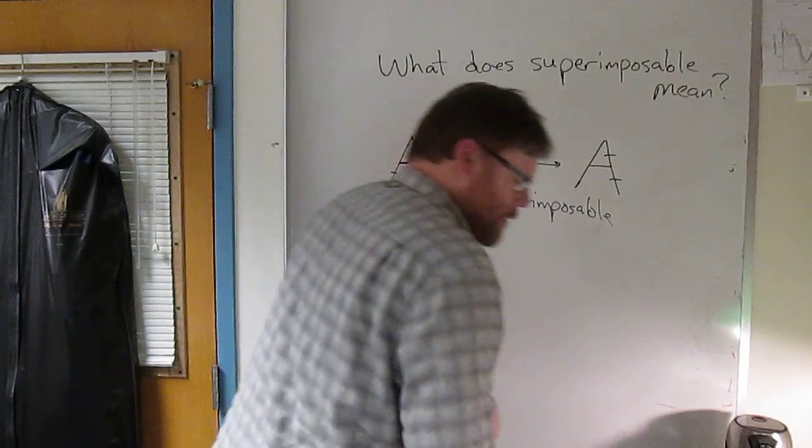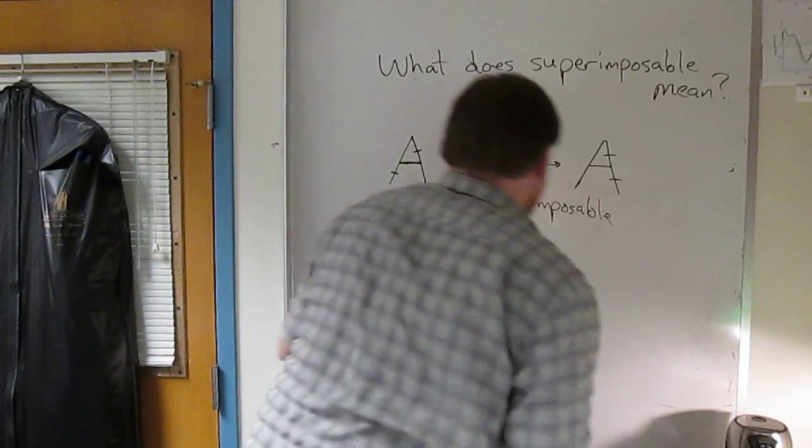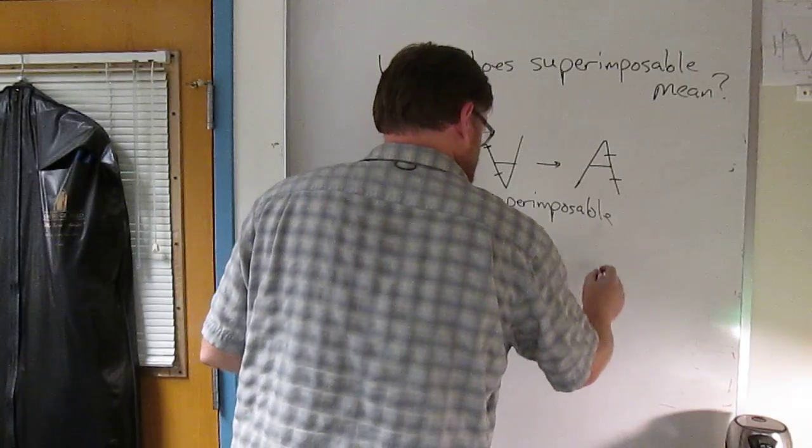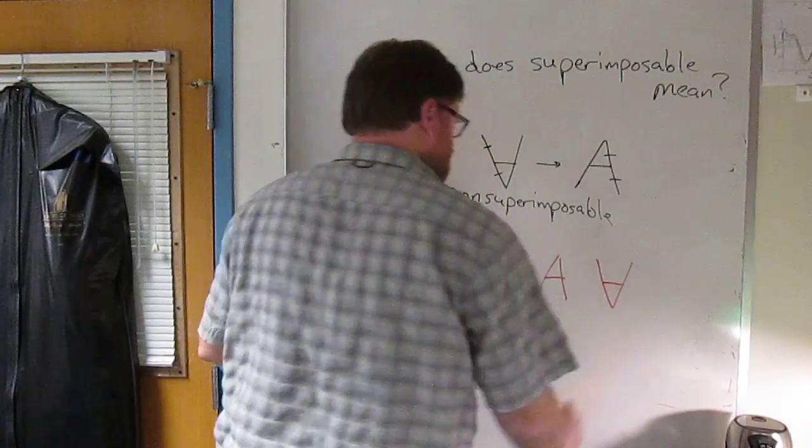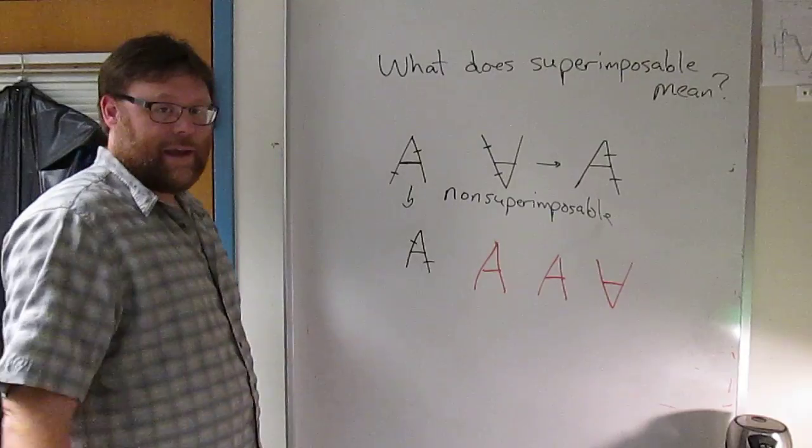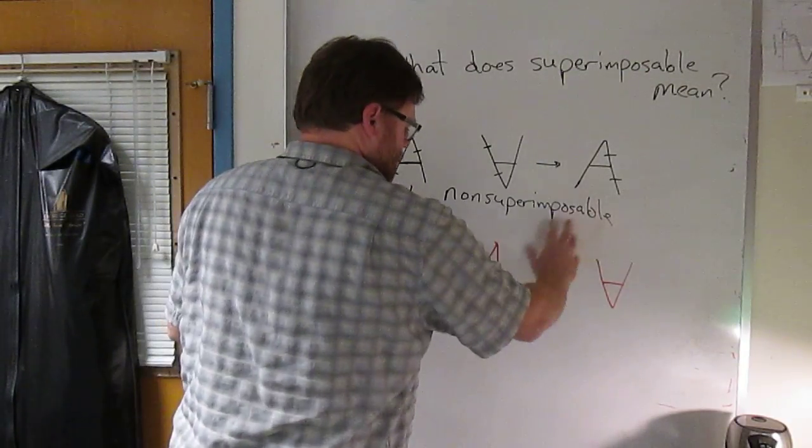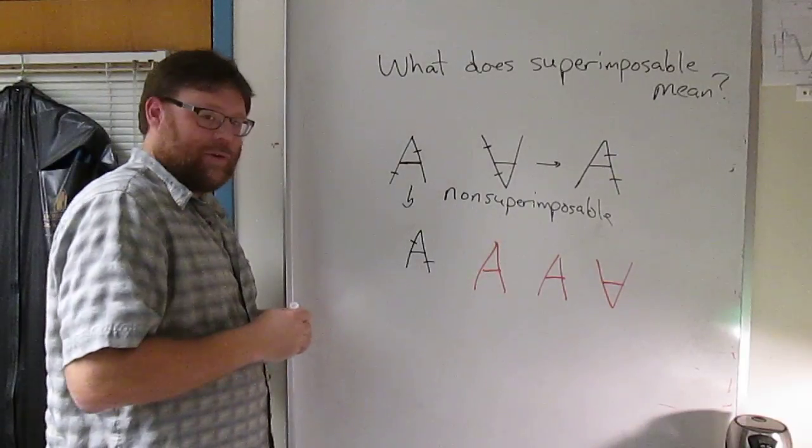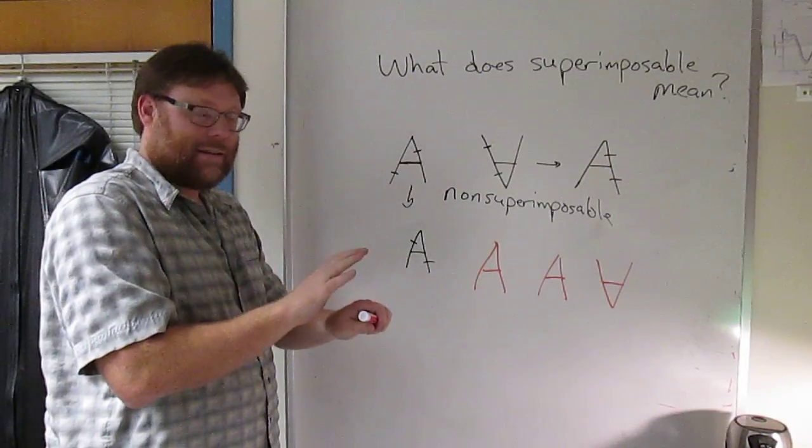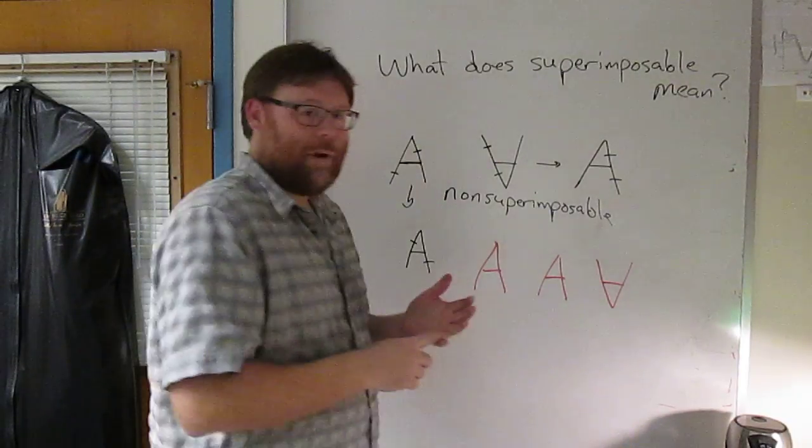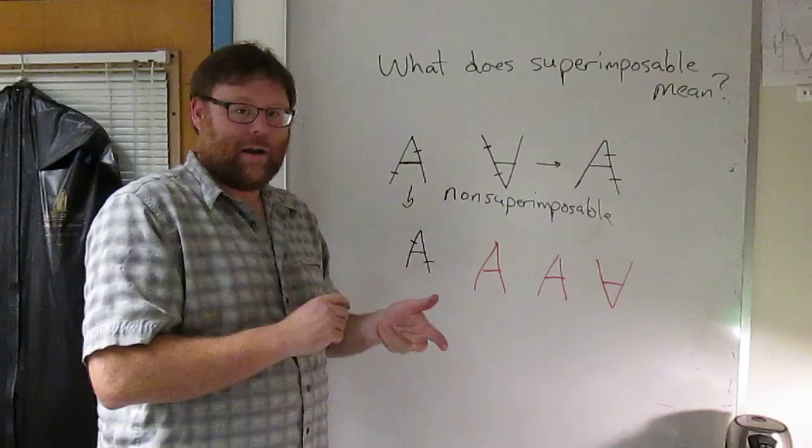Whereas I'll draw these in red. All three of those A's are superimposable. Obviously these two just slide over. This A moves like this. So again, superimposability means the two structures can be made to look exactly the same just by moving them around somehow in three dimensions. But don't break any bonds, don't make any bonds, don't spin around any bonds.